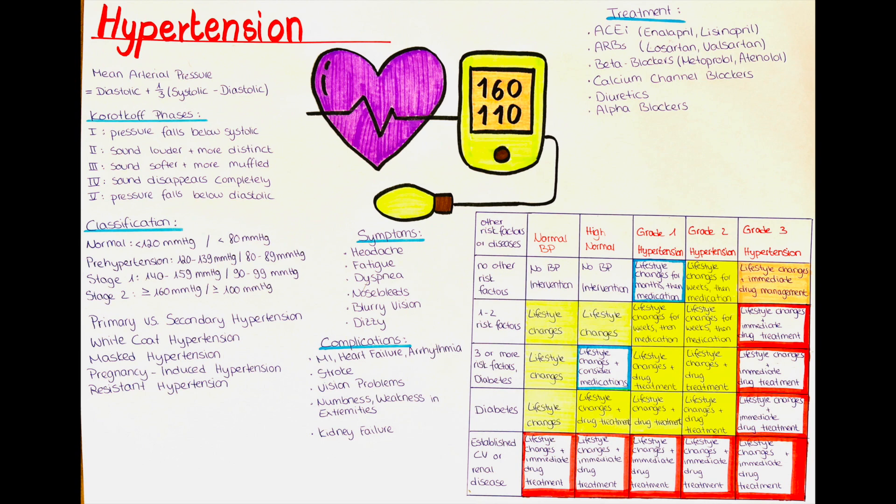In addition to systolic and diastolic pressure, there is another important measure of blood pressure, the mean arterial pressure. The mean arterial pressure is the average blood pressure during one heartbeat cycle. It is calculated using the following formula: Mean arterial pressure equals the diastolic pressure plus one-third of the systolic pressure minus the diastolic pressure.